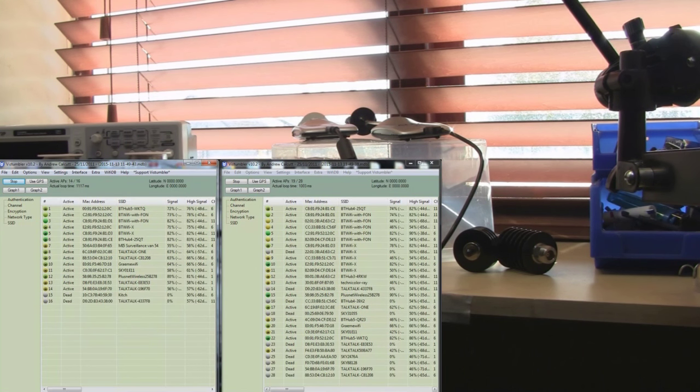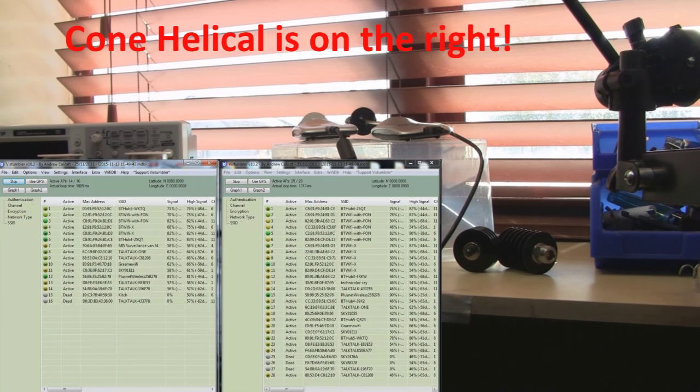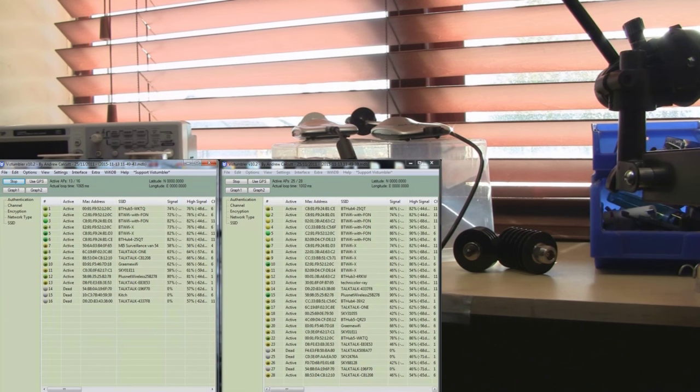Now that they've settled down and you look at the access points that both antennas have picked up, on the left there you've got the cone helical antenna. It's picked up many more access points than the more traditional helical antenna. But if you look at some of the access points that both antennas have picked up, the signal strength is very similar, but the cone antenna has a much wider beam width.